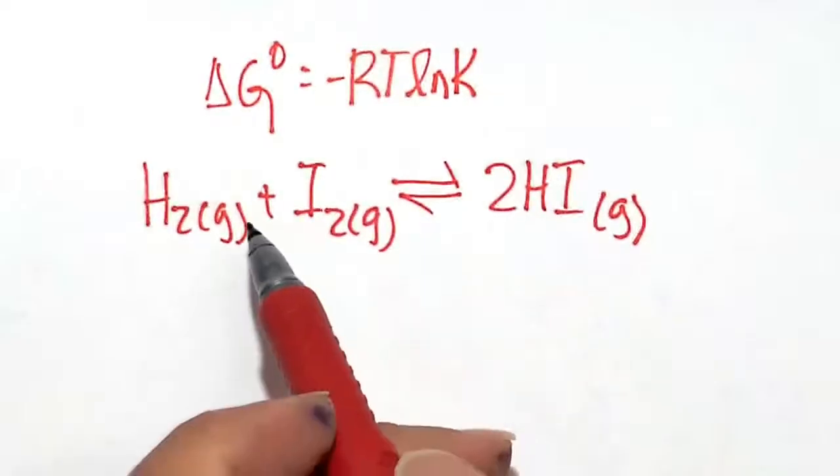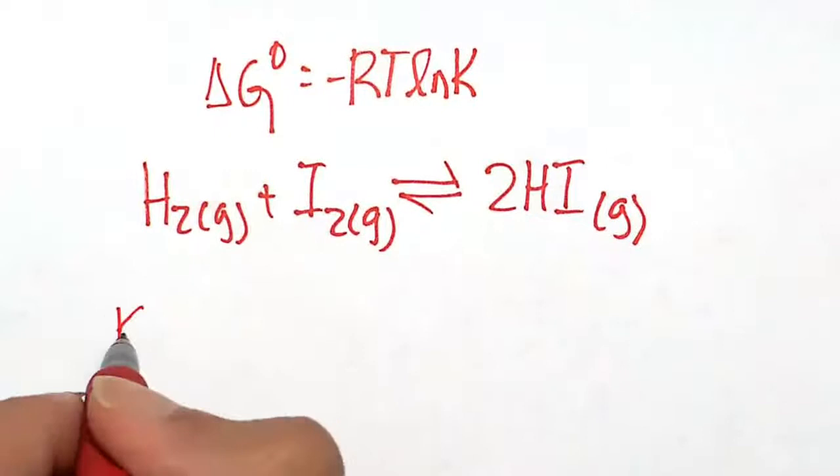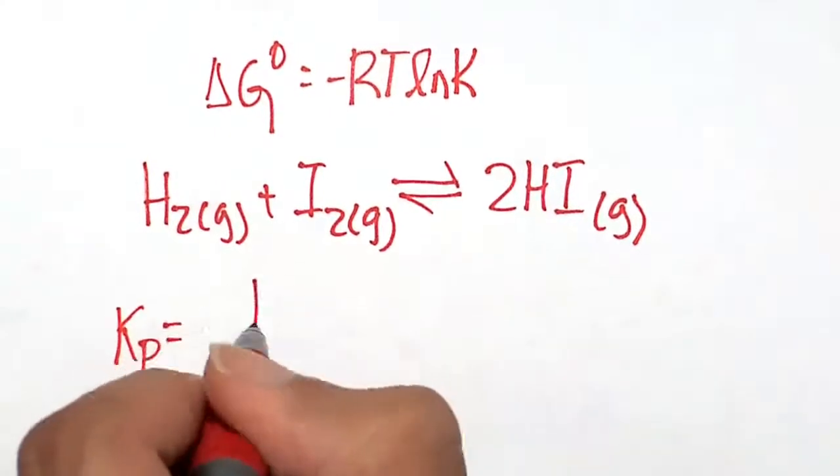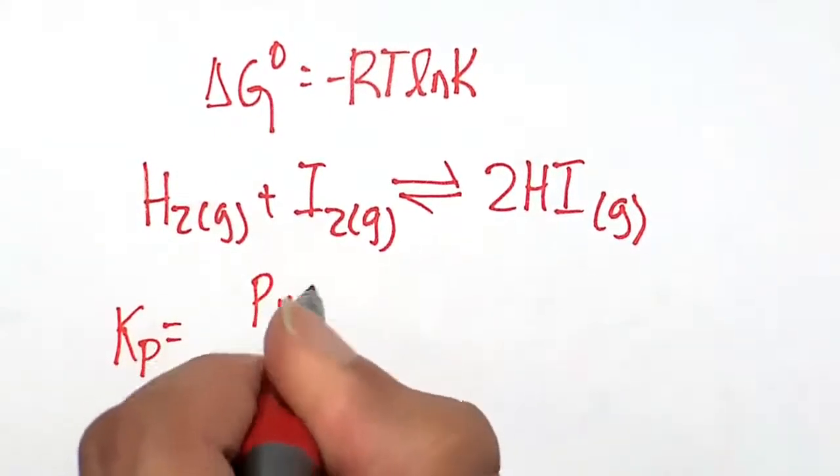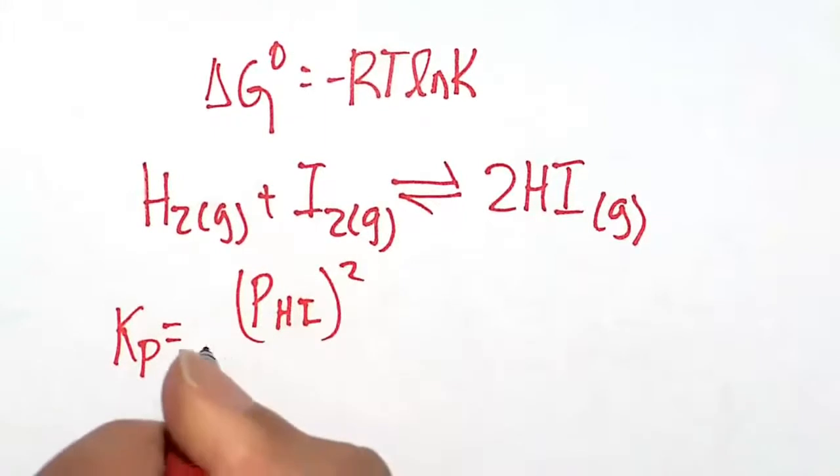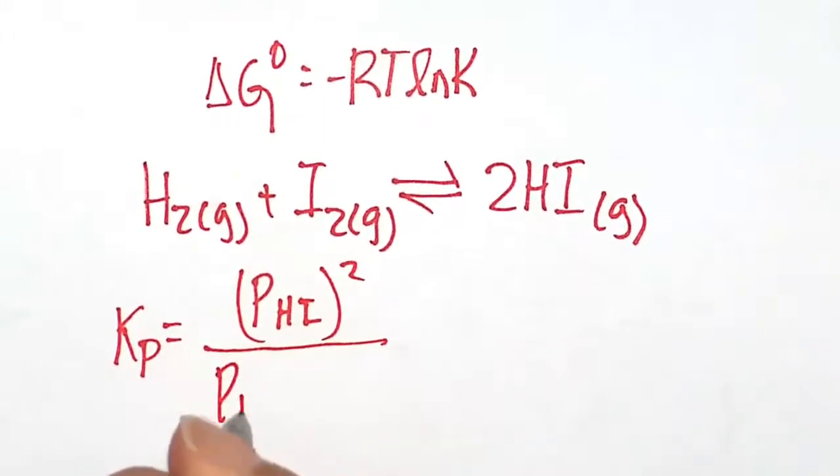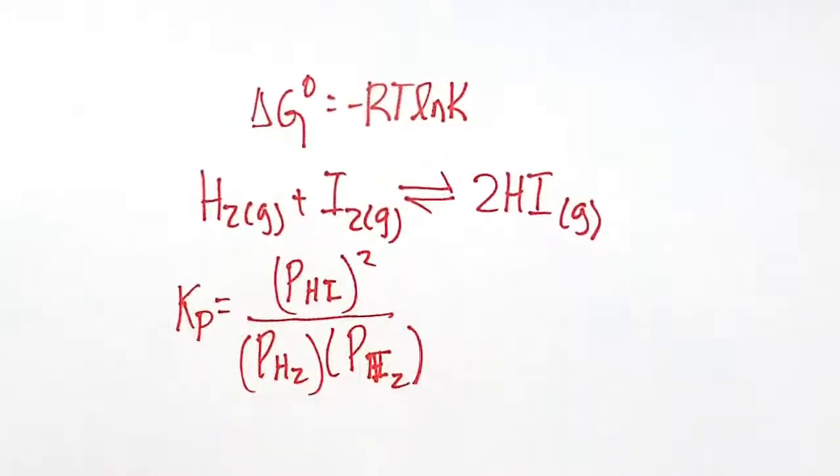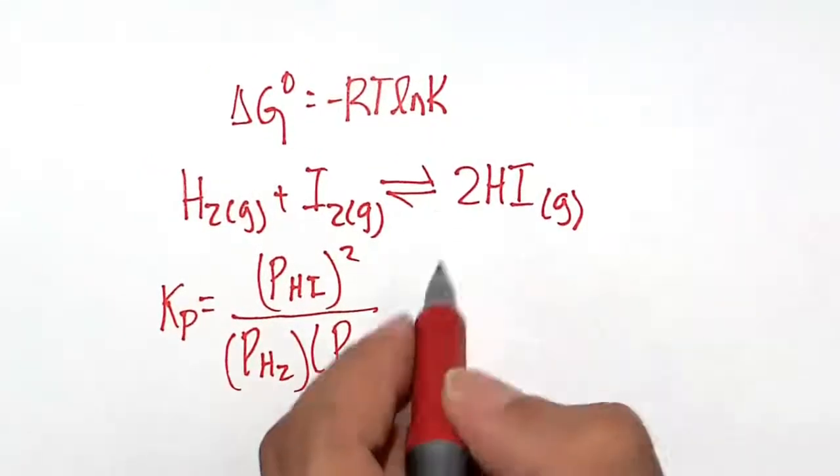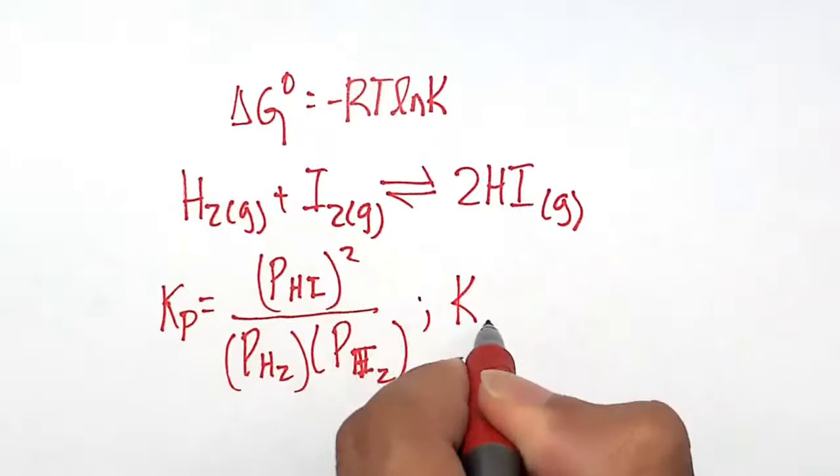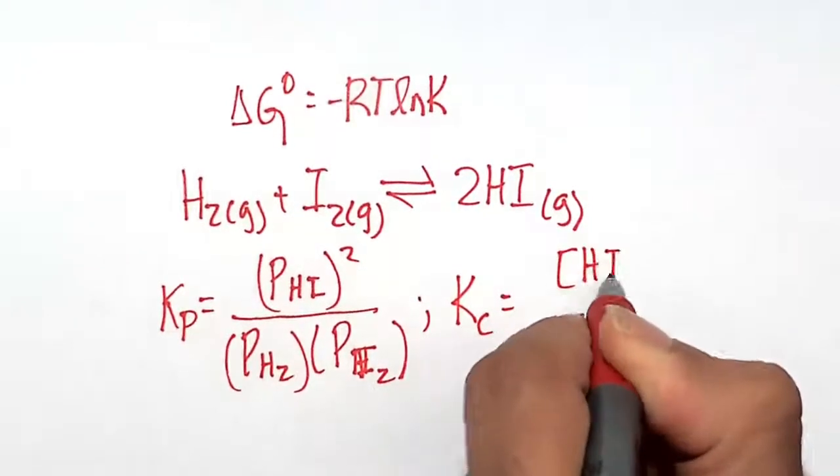Just a reminder here, this is the equation that we will use, and Kp, because it's a pressure, it's going to be pressure HI. We have to square it, divided by pressure of H2 times the pressure of I2. Don't forget, that is the version of the equilibrium constant in terms of pressure. We can also have an equilibrium constant in terms of concentrations.